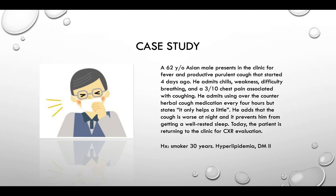Now moving forward to the case study. A 62-year-old Asian male presents in a clinic for fever and productive purulent cough that started four days ago. He admits chills, weakness, difficulty breathing, and a 3 out of 10 chest pain associated with coughing. He admits using over-the-counter herbal medication every four hours, but states it only helps a little.